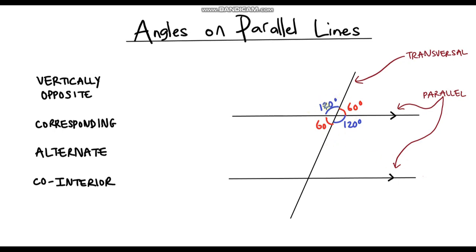Now we've calculated all of those angles, let's look at the ones down here. To calculate these we're going to use some angle properties. The first one is corresponding angles. Looking back at our 60 degree starting angle, if I look at this angle down here, well this angle is also 60 degrees.